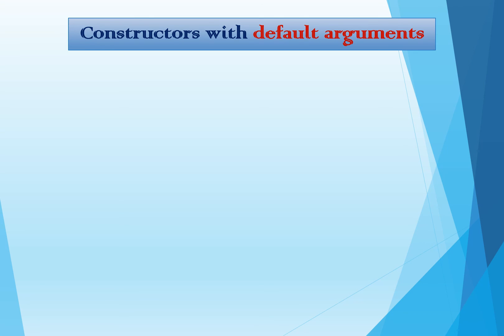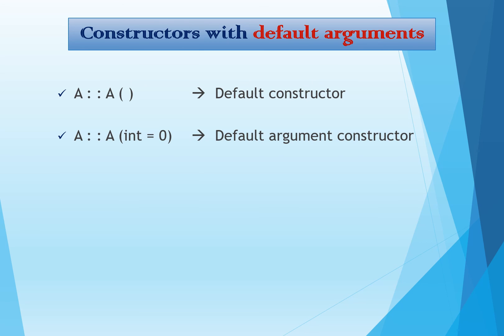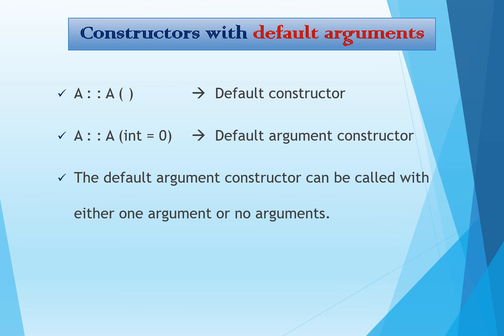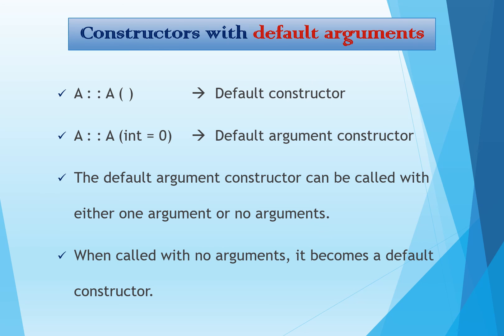Constructors with default arguments work as follows: the constructor is given a default value, such as i = 0. A default argument constructor can be called with either one argument or with no arguments. When called with no arguments, it behaves as a default constructor. When an argument is passed, the value of that argument is used and the default value is not taken.